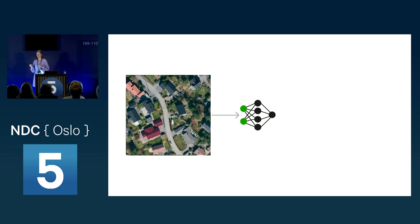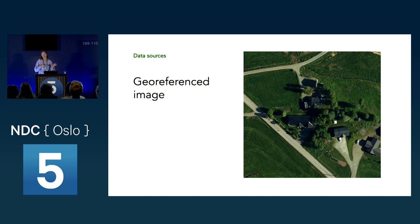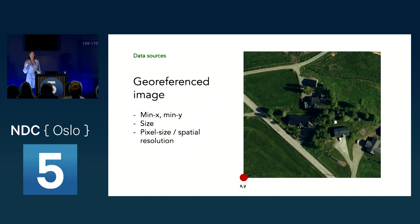When an AI is trained on all these images, you can pass in an image tile and it gives a prediction — a grayscale image showing how certain it is that each pixel is a building. Both the aerial images and labels are geo-referenced images, meaning we have the coordinate for the lower-left corner, the size of the image, and the pixel size or spatial resolution — for example 10 centimeters per pixel. With all this information we can figure out where in the real world a detected building is.